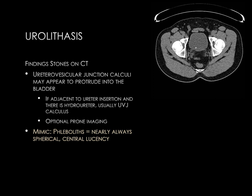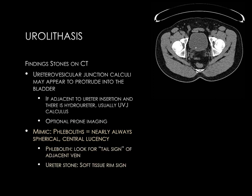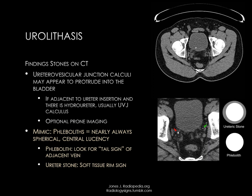A mimic of ureteral stones is phleboliths — physiologic calcifications within small veins. Phleboliths are typically spherical with a central lucency, whereas stones are often more of a torpedo shape. CT findings that help differentiate include a tail sign of the adjacent vein with phleboliths, or a soft tissue rim sign of a stone within the ureter. It's important to trace the ureters all the way up and down, noting that phleboliths are often not along the course of the ureter.